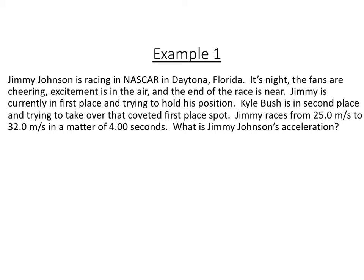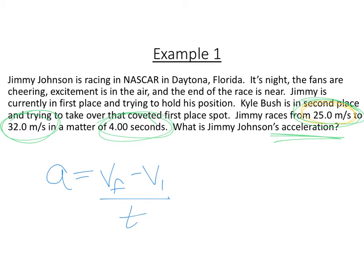Here is an example. We got some NASCAR drivers here. Jimmy Johnson is racing from 25 miles per hour to 32 miles per hour, and he's doing this in four seconds. We want to know what his acceleration is. We have the equation A equals V final minus V initial over time. V final would be 32, V initial would be 25, and he did this in four seconds.